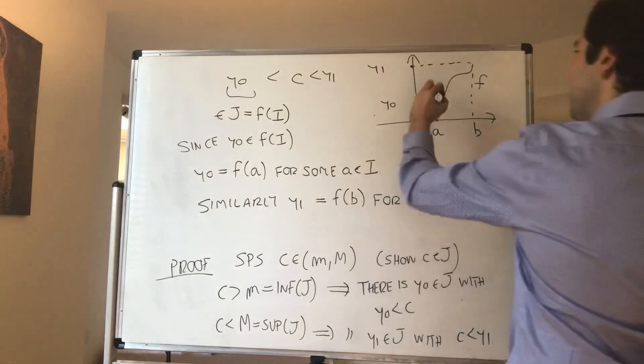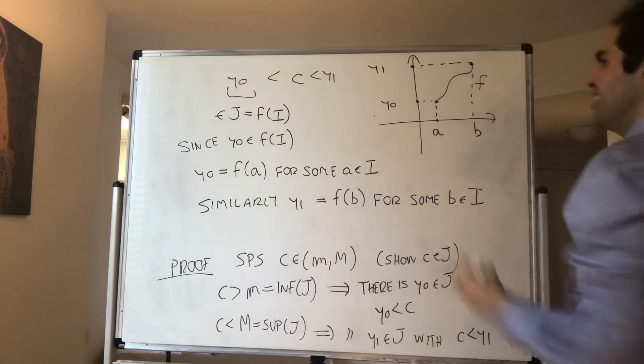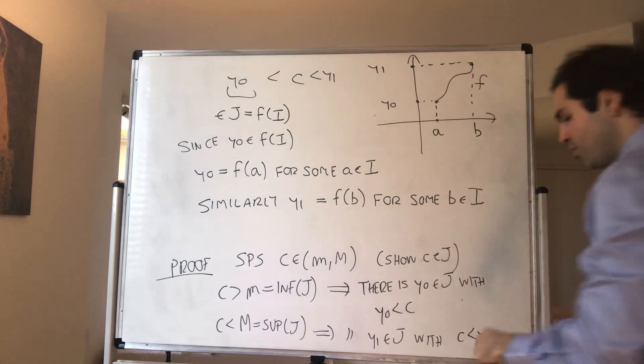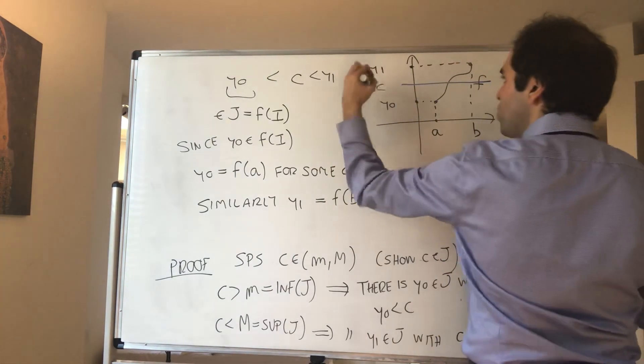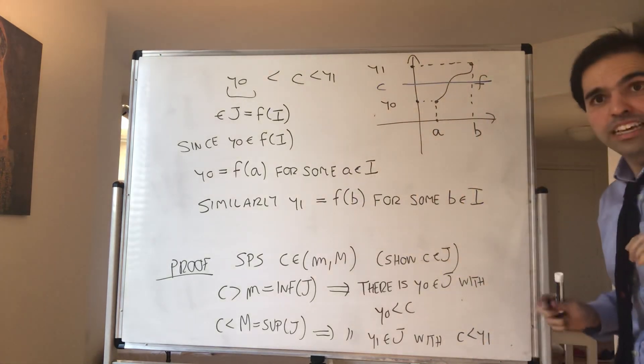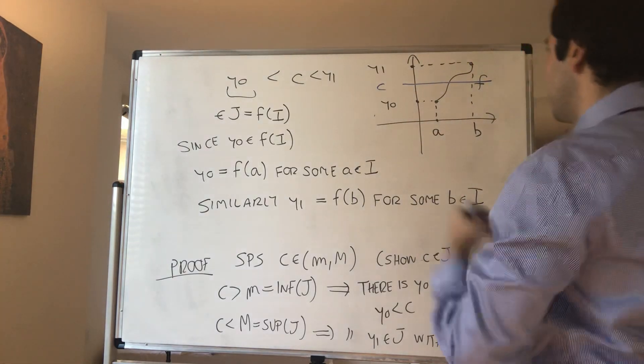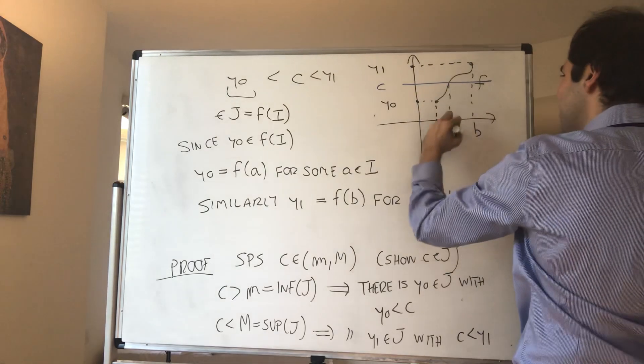But then, what do we have? So that's very interesting. c, remember, is between y₀ and y₁. So c is between f(a) and f(b). And therefore, by the intermediate value theorem, we can find some x such that f(x) equals c.